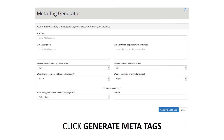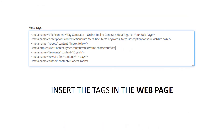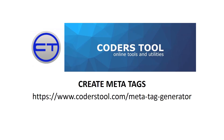The seven most important meta tags are: title tag, meta description, canonical tag, alternative text tag, robots meta tag, open graph meta tags and Twitter cards, and responsive design meta tag.